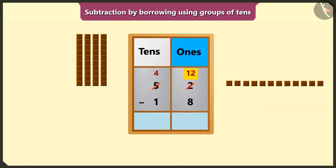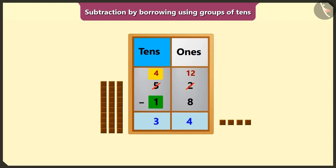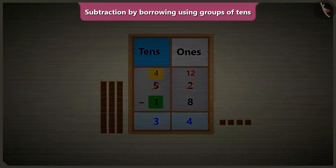Now if we subtract 8 ones from 12 ones, we will have 1, 2, 3 and 4 left. So we will write 4 in the place of ones. Now we have to subtract the numbers in the tens place. If we subtract 1 ten from 4 tens, we will get 3 tens, so we write 3 in the place of tens.